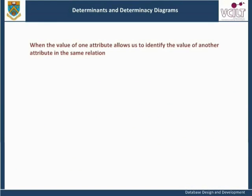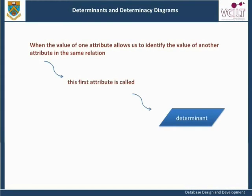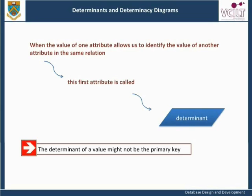Determinant: When the value of one attribute allows us to identify the value of another attribute in the same relation, this first attribute is called a determinant. The determinant of a value might not be the primary key. This is true for groups of attributes as well, so if A is the determinant of B, A and B may each be single attributes or more than one attribute.